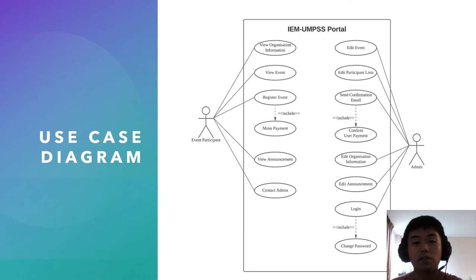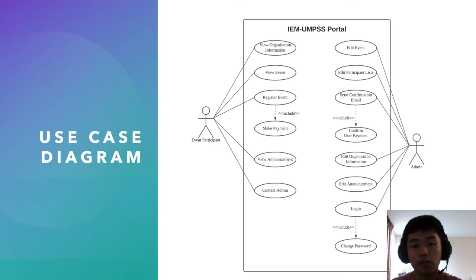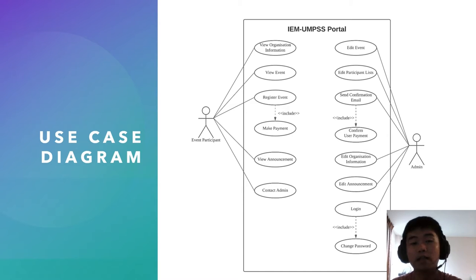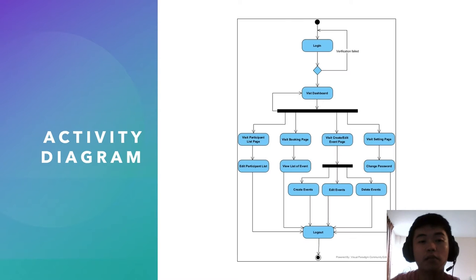From the admin perspective, we can see that admin can edit events, edit participant list, send confirmation email which is needed to confirm user payment, edit organization information, edit announcement, and lastly, logging — where the admin can change the admin password.